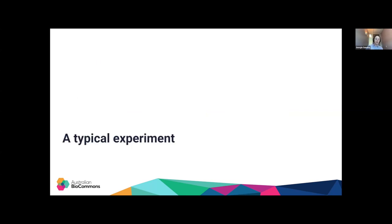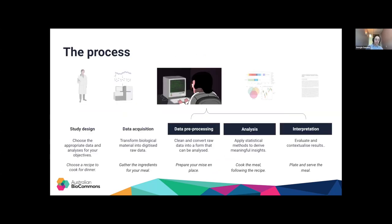Now that we've got some basics out of the way, let's talk about what's involved in a typical experiment. While we're all going to be working with different data types and different analyses and processes, we're largely all following standard protocol. I've made a very basic cooking analogy here that might help you understand it. We're all going to start with study design, where we decide what kind of data we need to answer our research question and the specific processes we need to apply to that data to extract answers for our research aims.